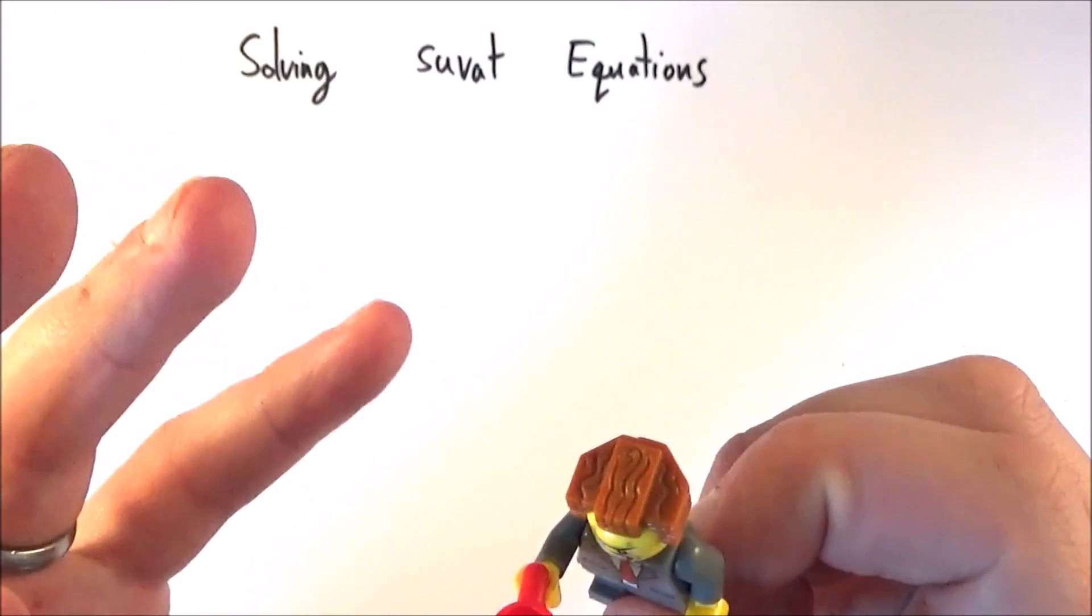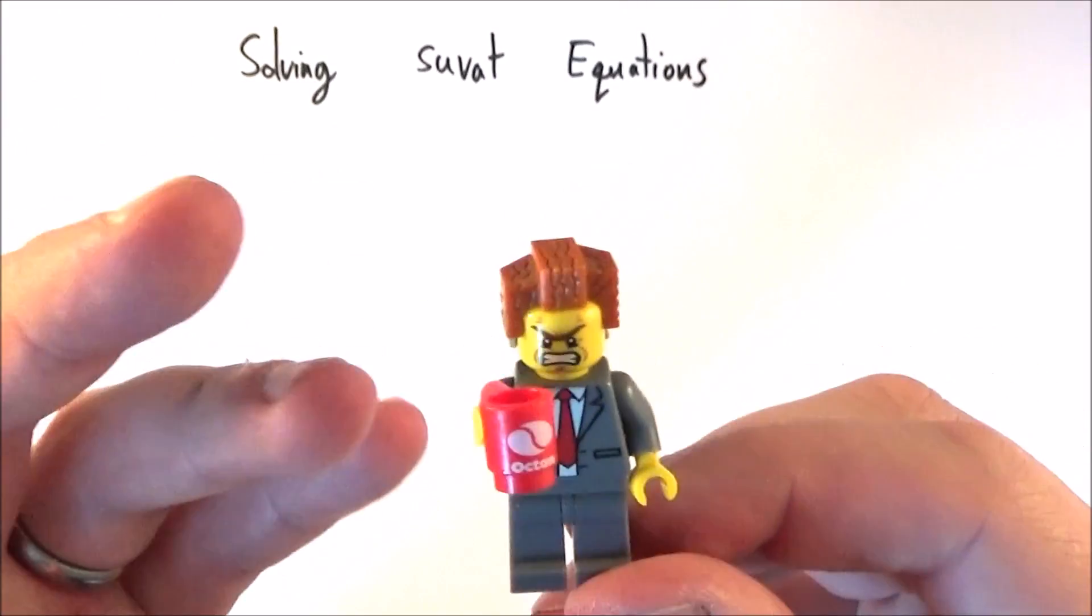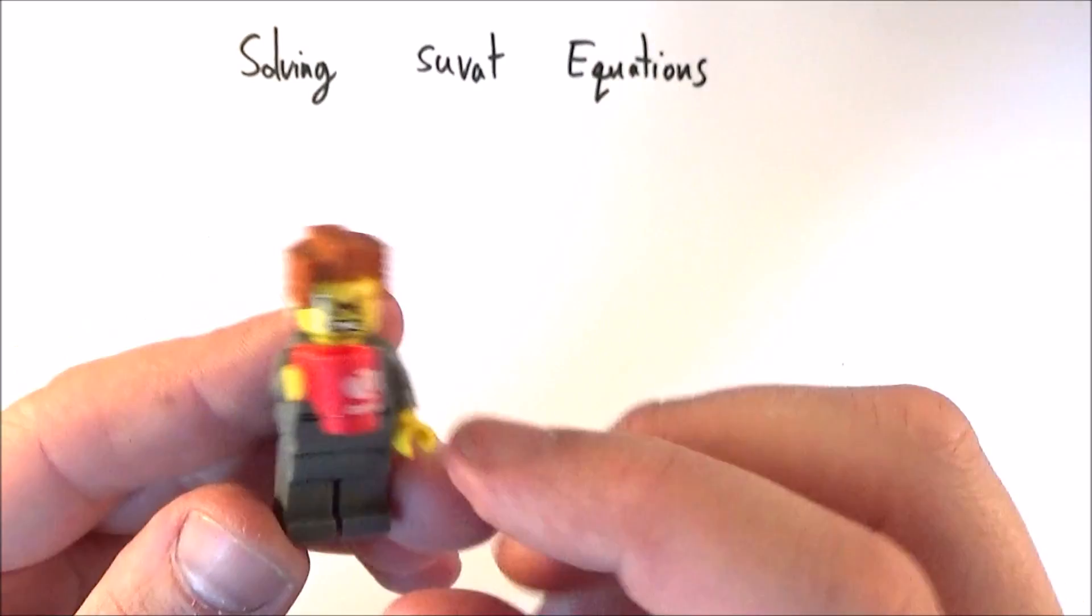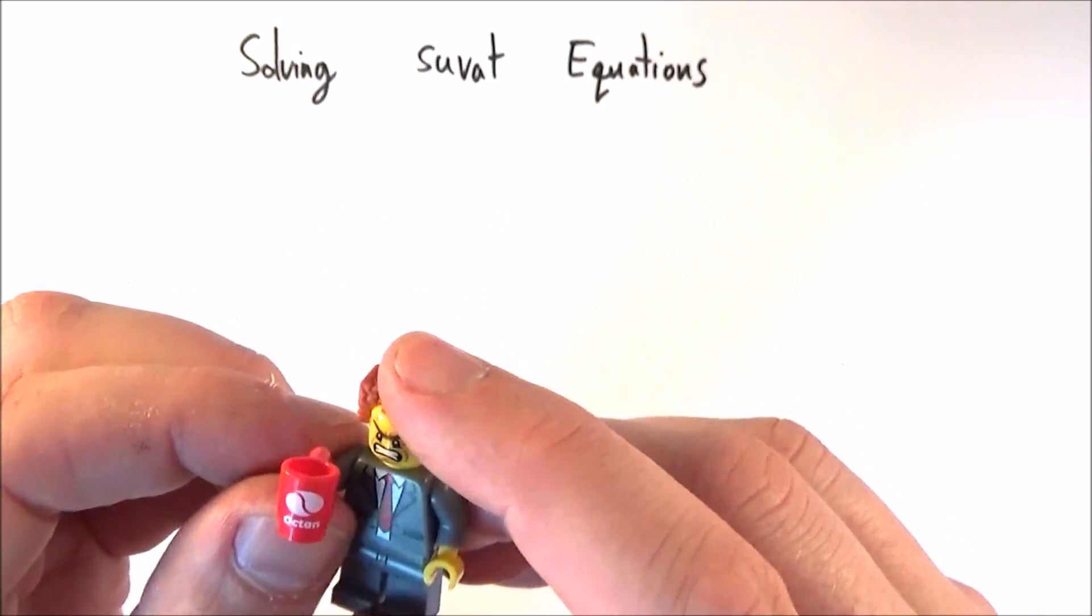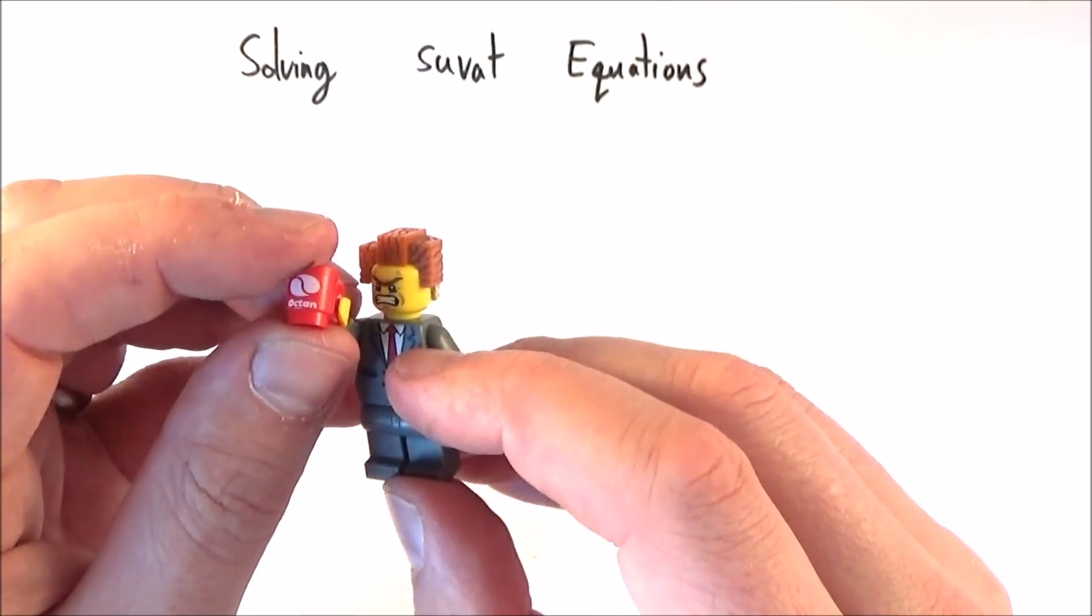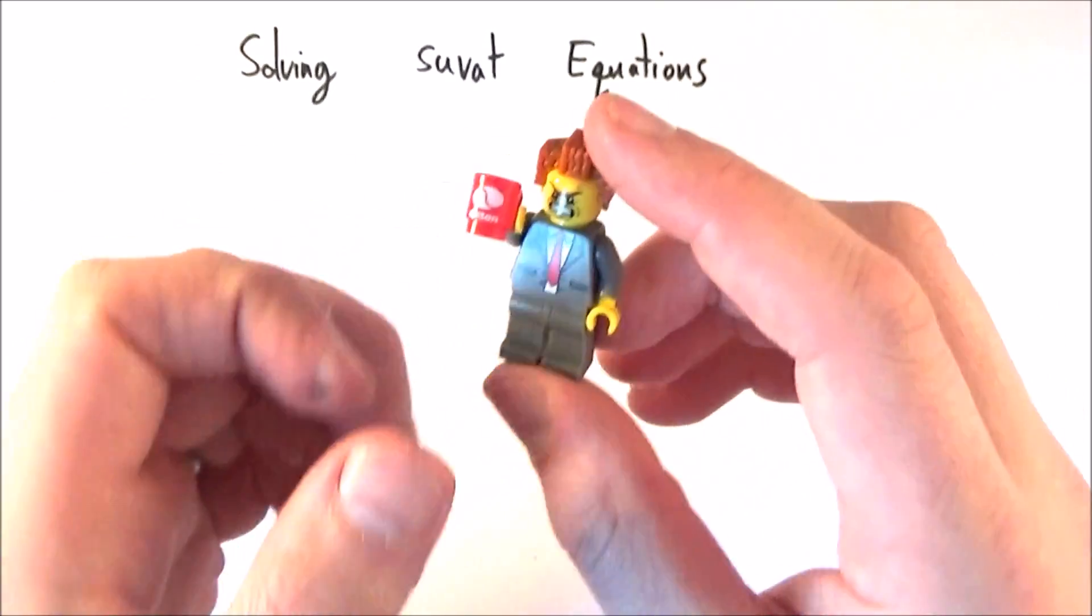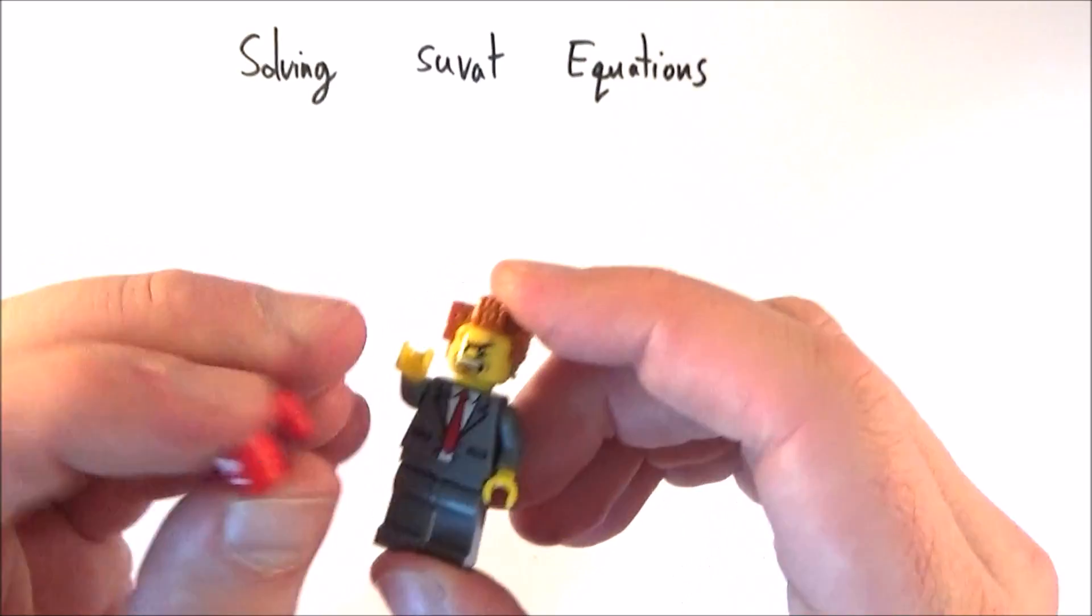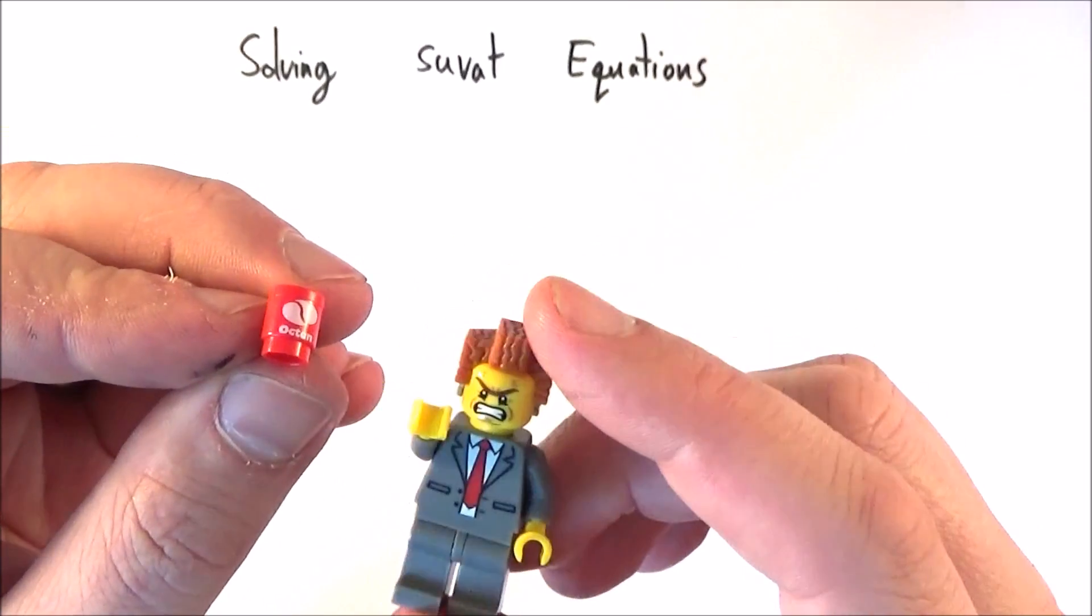Okay, so the SUVAT equations are fairly straightforward, but actually using them for real-world problems gets a bit more tricky. And what we have here is maybe a person and they're going to drop an object from sort of head height. And what we can do is, by basically just using that information, we can work out how quickly the object actually impacts with the ground and also how long it takes to fall.